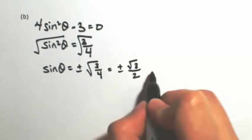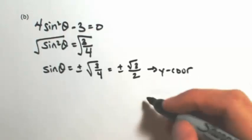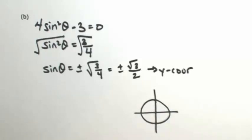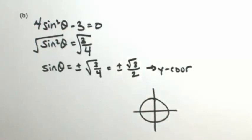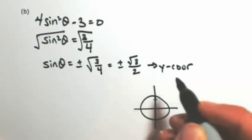Okay, so on my unit circle, plus or minus, that's in all four quadrants. I'm looking for where the y-coordinate is square root of 3 over 2, which is much closer to the top than the 1 half was.